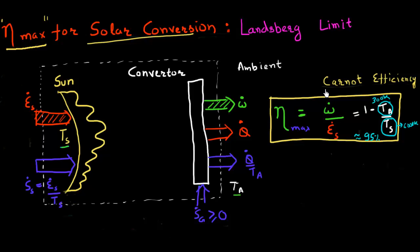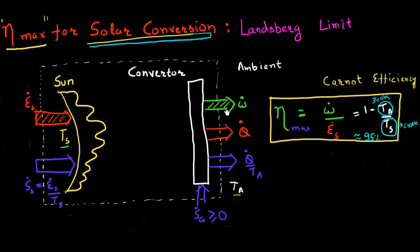But I also stated that this Carnot efficiency can never be achieved for solar energy conversion. So why did I make that statement? The reason is because there are two things we need to correct in this formalism if we need to take into account a converter which is converting this solar energy into useful form of work. So what are those two corrections?